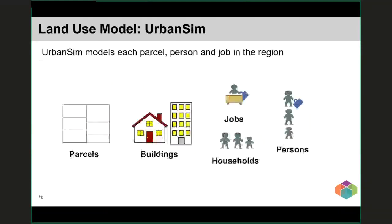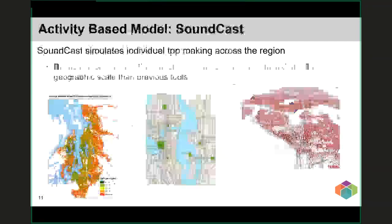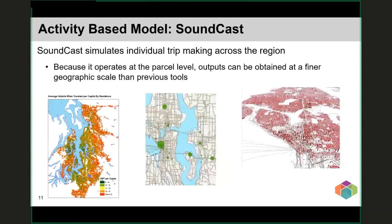UrbanSim takes the regional forecast of people, households, and jobs and estimates where people will live and where jobs will be located. The inputs to UrbanSim are very detailed, including parcel-level information and zoning by jurisdiction for both today and the future. Housing costs, availability of land for redevelopment, and allowable land uses are all key factors informing where future development can occur. The choice of where people live and work is also influenced by transportation supply and costs from Soundcast, our demand model.